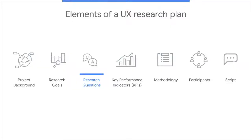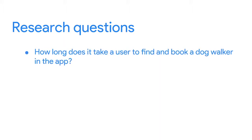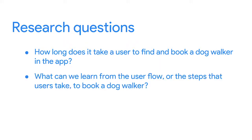After you determine research goals, you need to develop detailed research questions for your plan. What are the questions your research is trying to answer? For example, our research questions might be: how long does it take a user to find and book a dog walker in the app? And, what can we learn from the user flow — the steps that users take to book a dog walker?